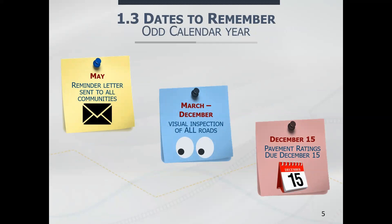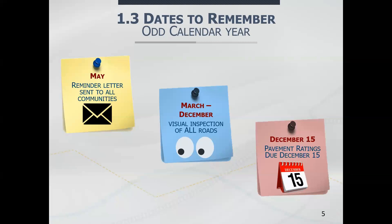Here are some dates to remember. Every odd calendar year, you will receive a letter — an email, to be more accurate — from Wisconsin DOT in May. Some of you have already received an email from me this year in May, going over the state requirements for your pavement ratings as well as some frequently asked questions. In March through December is when you will start your visual inspection for all roads in your jurisdiction, and December 15th is the day that pavement ratings must be submitted.